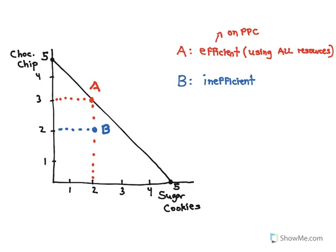We can say that point B is inefficient. So what do we mean by inefficient? Well it's the opposite of efficient. We are not using all resources. And you can see that here because we're only making two batches of chocolate chip plus two sugar cookie. So that's four batches when we could be making five batches. We can make one more batch of chocolate chip or one more batch of sugar cookies without giving up any of the other type of cookie. So this is inefficient.